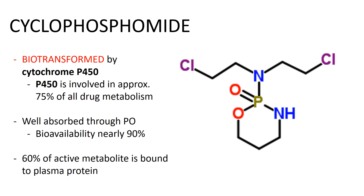Bioavailability is nearly 90%, which is great, so we can just give it orally. About 60% of the active metabolite is going to be bound to plasma protein. So 90% of the drug is absorbed through the oral route, undergoes first-pass effect to the liver where cytochrome P450 converts it into active metabolites, and then 60% of those active metabolites are bound to plasma protein.